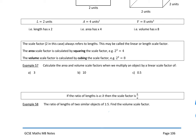In this question, calculate the area and volume scale factors when we multiply an object by a linear scale factor. First, k equals 3: k squared is 3 squared which is 9, and k cubed is 3 cubed which is 27. Second, k equals 10: k squared is 10 squared which is 100, and k cubed is 10 cubed which is 1,000.